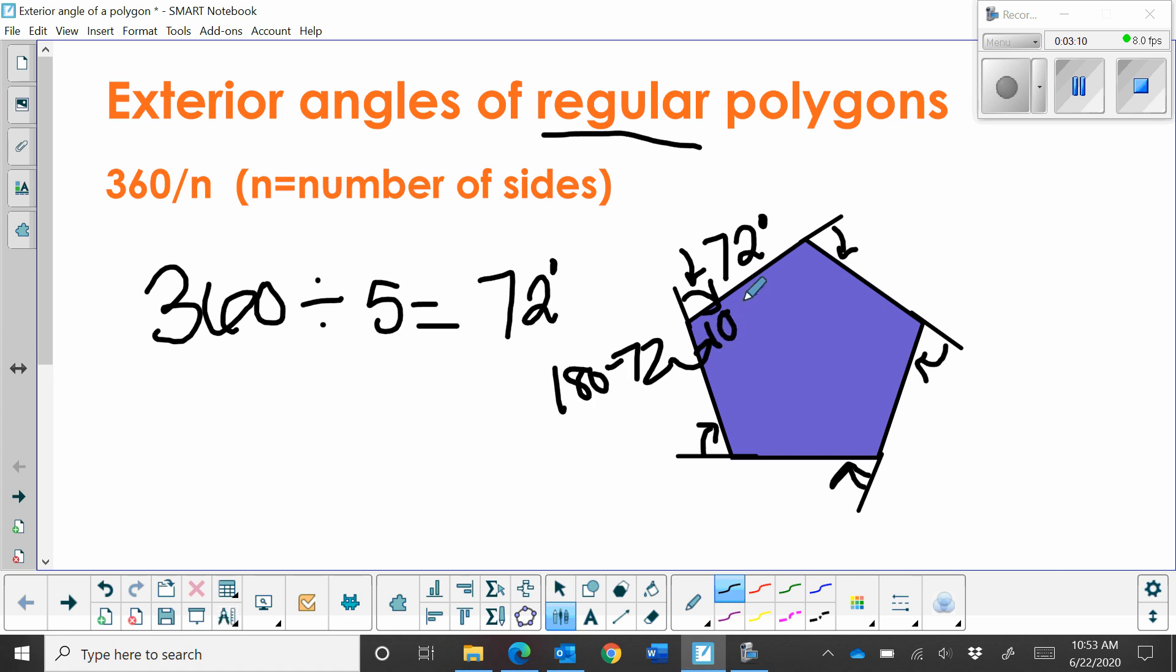And that's 108. So each angle inside this polygon is 108. And that's how you can find interiors from exteriors. I hope this video was helpful, and you can use it to find exterior angles of polygons.